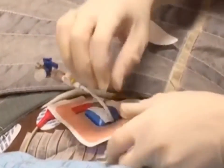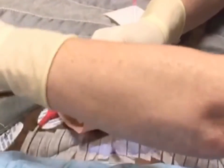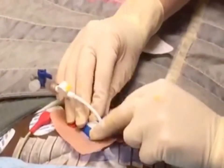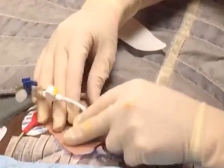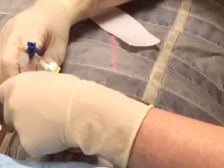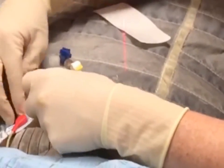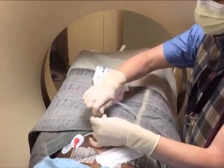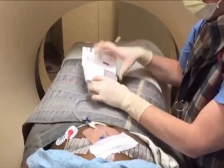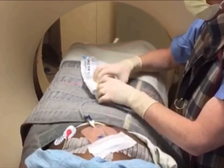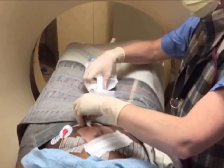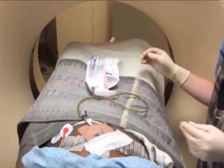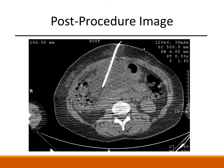This can prevent the catheter from catching on clothing and hurting the patient after the procedure has been completed. When securing the catheter, it is important to make sure that it is kept in the position that it would naturally lie. Once the catheter has been appropriately fixed down, it is attached to an accordion drain which provides suction when compressed and provides continuous drainage into a collection bag. A post-procedure CT image shows the tip of the catheter in the fluid collection and demonstrates a reduction in size of the fluid collection.